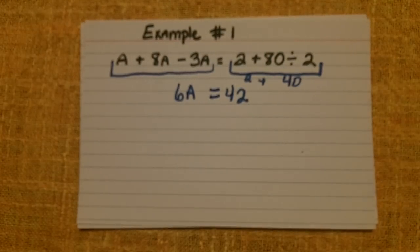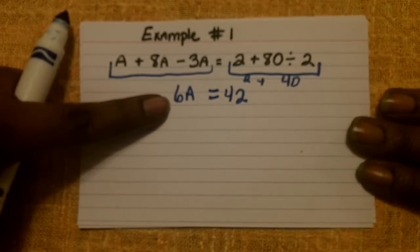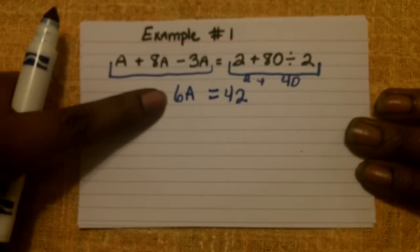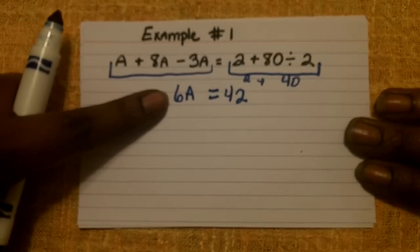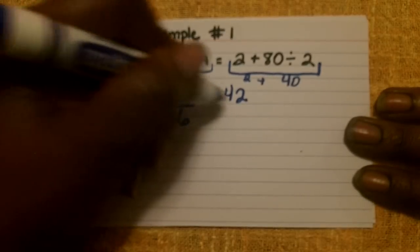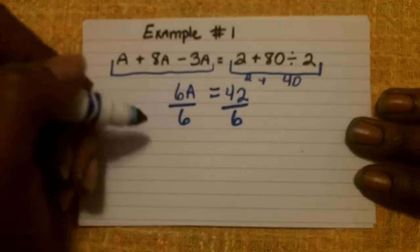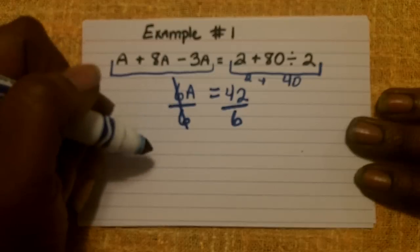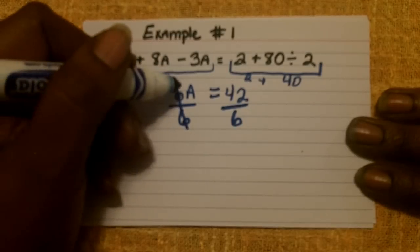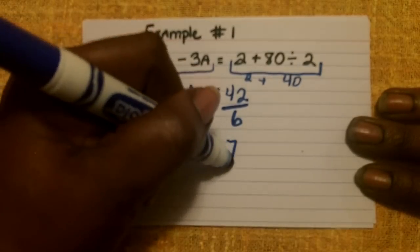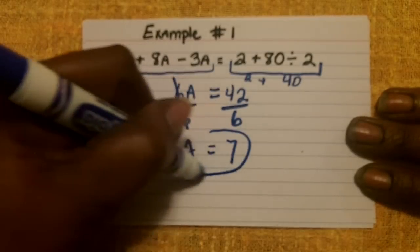Step two says to do either addition or subtraction, but what we have here is neither being shown. So since we don't have addition or subtraction, we're going to skip step two and move straight to step three: multiply or divide. Since multiplication is being shown, I'm going to divide both sides by six. Those two sixes cancel out, leaving me with 1a, which is the same thing as a. And 42 divided by six is seven. So the solution for this equation would be seven.